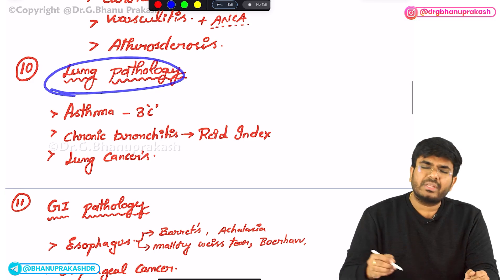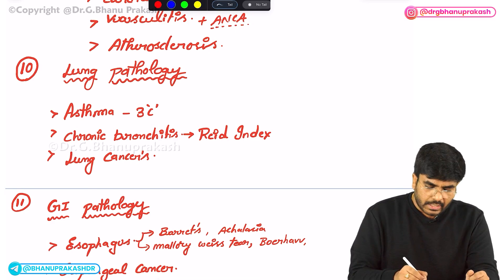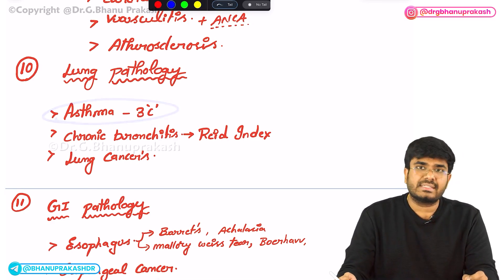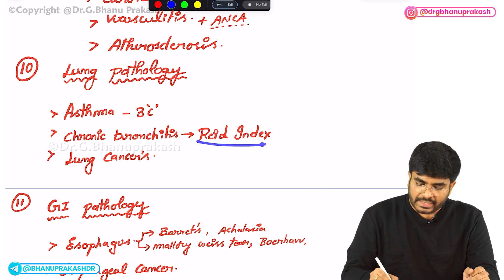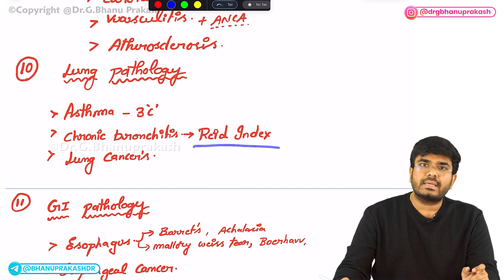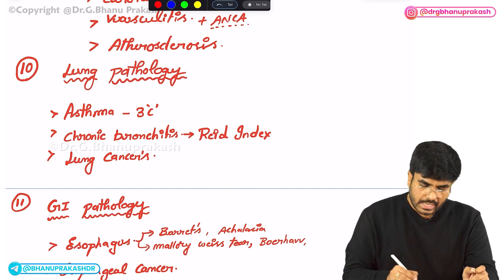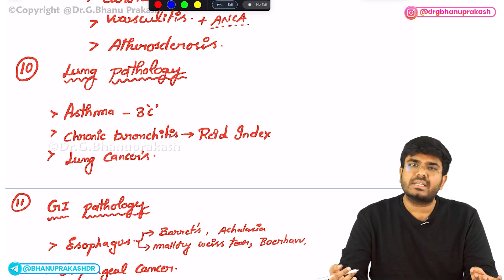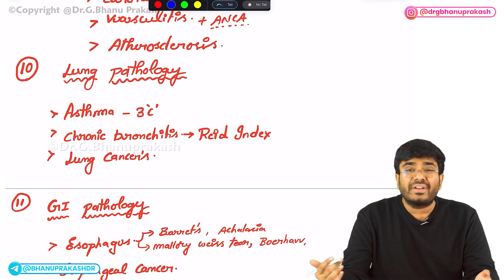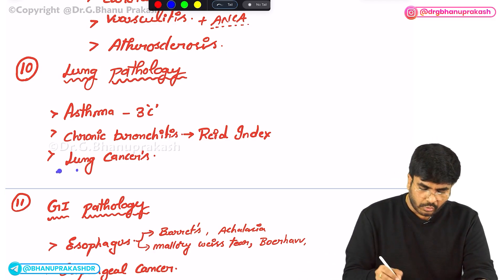In lung pathology, concentrate on the 3C bodies — the Charcot-Leyden crystals, Curschmann spirals, and Creola bodies seen in asthma, including image-based questions. For chronic bronchitis, know the Reid's index — its value is increased in chronic bronchitis. For lung cancers, know the different types along with their paraneoplastic syndromes. Small cell carcinoma is a very aggressive tumor that produces different types of hormones in the body as part of paraneoplastic syndromes.